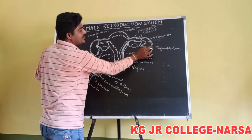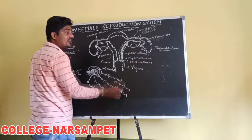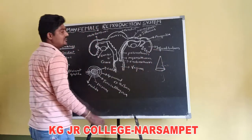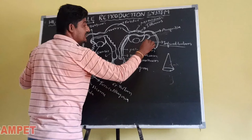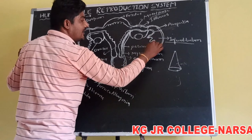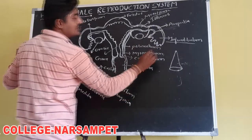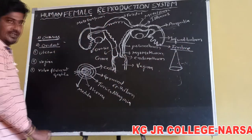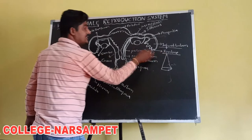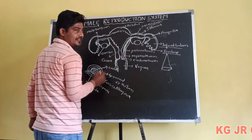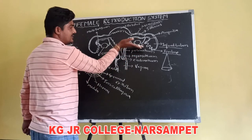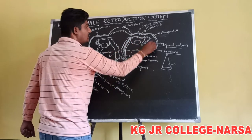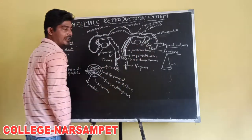The posterior region is called the infundibulum, which looks like a funnel shape. At the edges of the infundibulum, finger-like projections are present, called fimbriae. The function of the fimbriae is the collection of the ovum after ovulation — when the ovary releases the ovum, the fimbriae collect, receive, and transfer it to the next part.